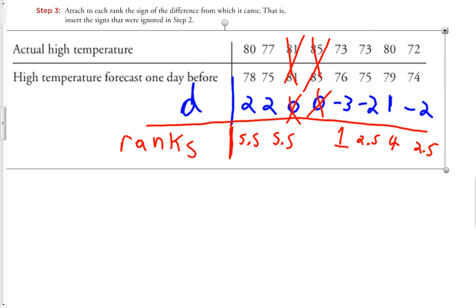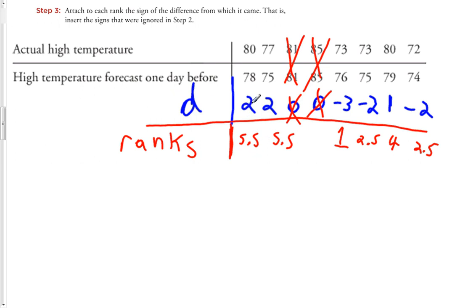Step three is to attach to each rank the sign of the difference from which it came — inserting the signs that were ignored in step two. The first two ranks came from positive differences, so 5.5 and 5.5 stay positive. The rank of 1 comes from a negative difference, so it becomes negative 1. The rank of 2.5 for negative three is also negative. The rank of 4 stays positive because 1 is a positive difference. And the remaining 2.5 rank came from a negative difference, so it also becomes negative.